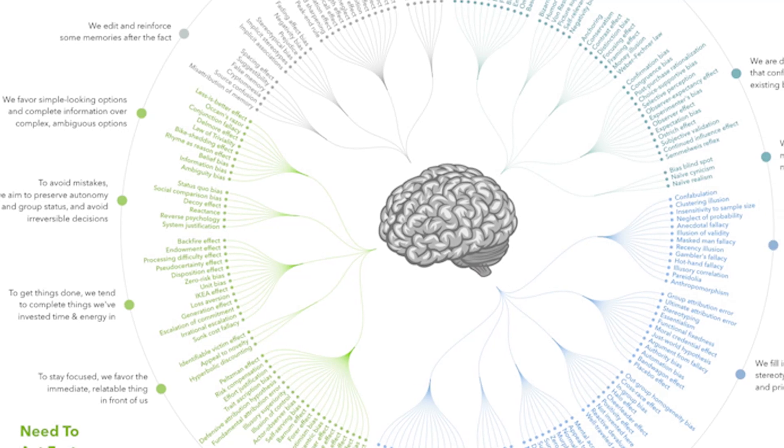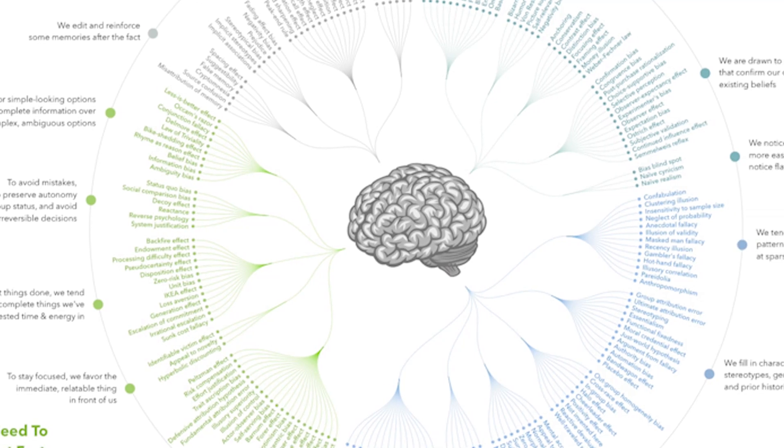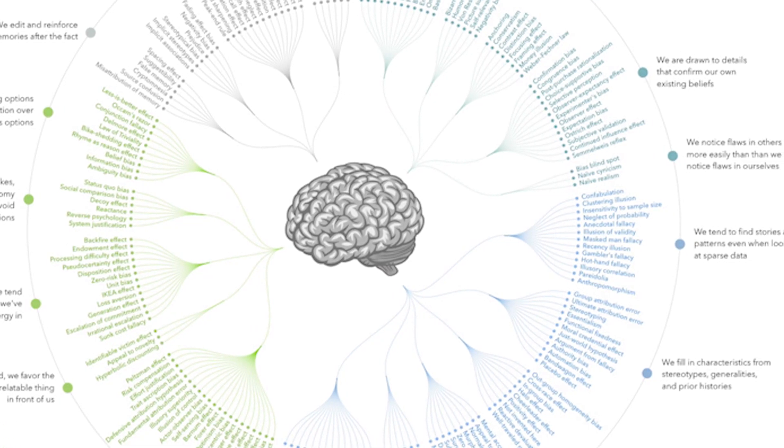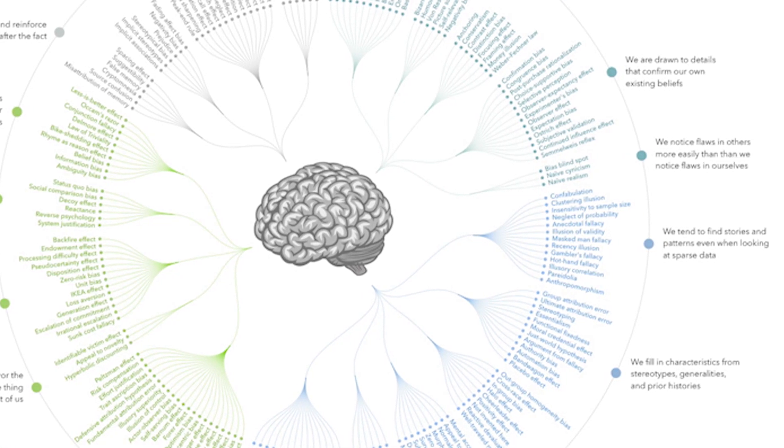Now at this point on the channel you should probably be aware that we humans are pretty biased. So far, behavioural scientists have uncovered over 200 different systematic problems with our cognition that lead us to making consistent, predictable, irrational decisions all the time.